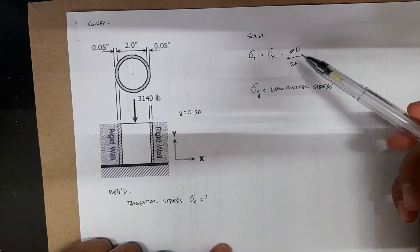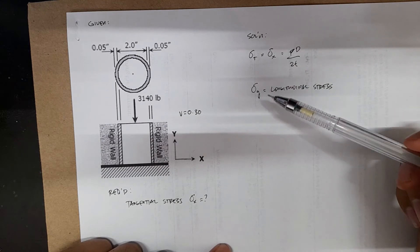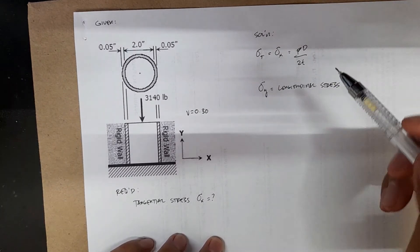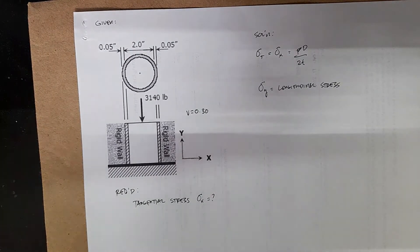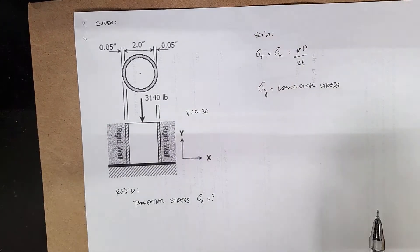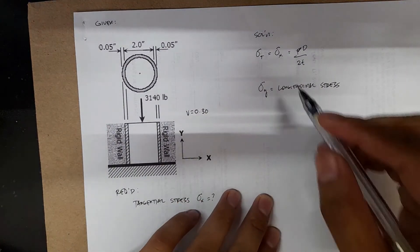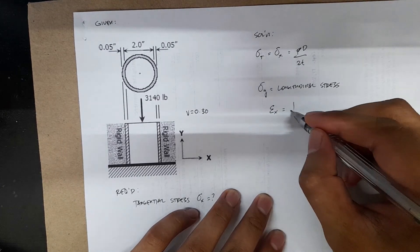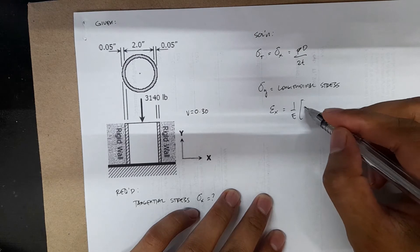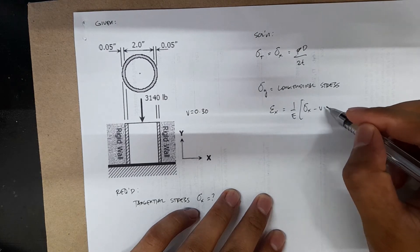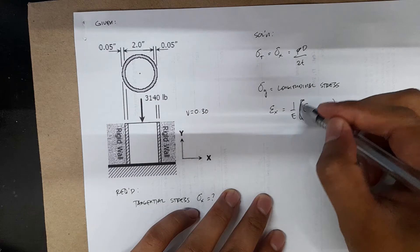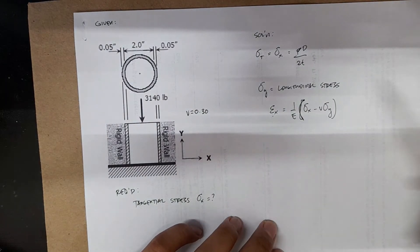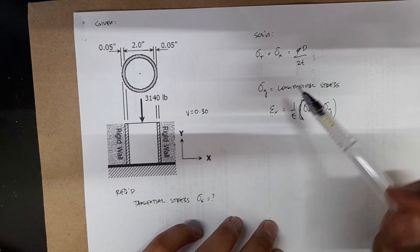Another equation that relates stress x and stress y is the strain equation. Strain x equals 1 over E times (stress x minus v times stress y). We're using this strain equation because